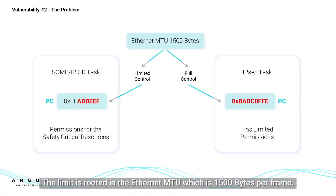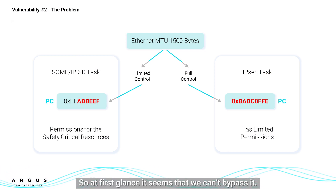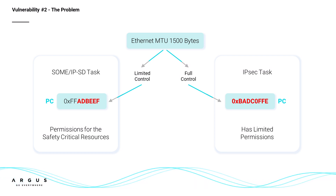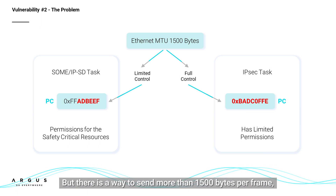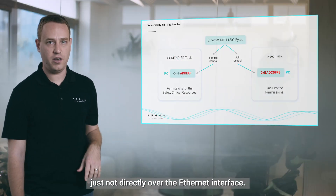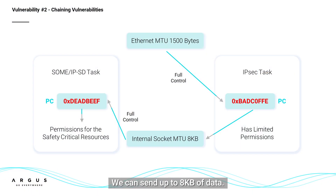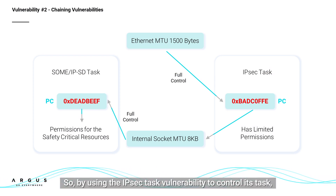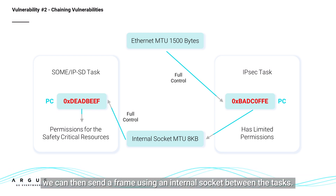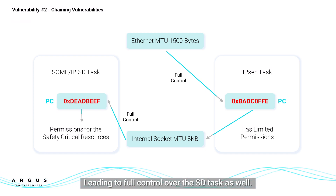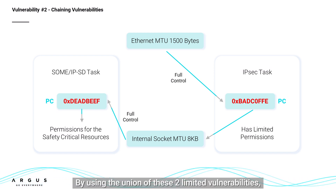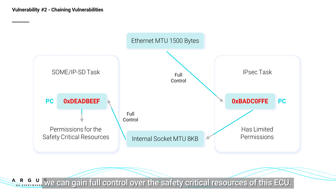The limit is rooted in the ethernet MTU, which is 1500 bytes per frame. So at first glance, it seems that we can't bypass it. But there is a way to send more than 1500 bytes per frame — just not directly over the ethernet interface. By using an internal socket, we can send up to eight kilobytes of data. So by using the IPsec task vulnerability to control its task, we can send a frame using an internal socket between the tasks, leading to full control over the SD task as well. By using the union of these two limited vulnerabilities, we can gain full control over the safety critical resources of this ECU.